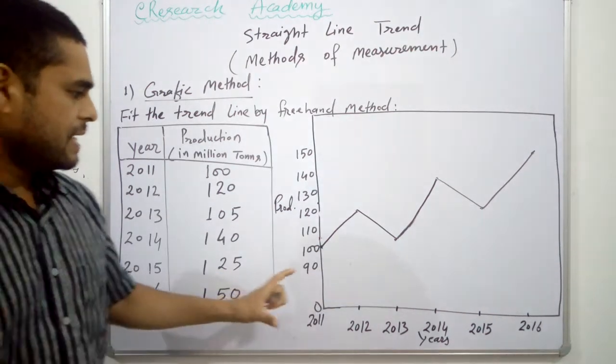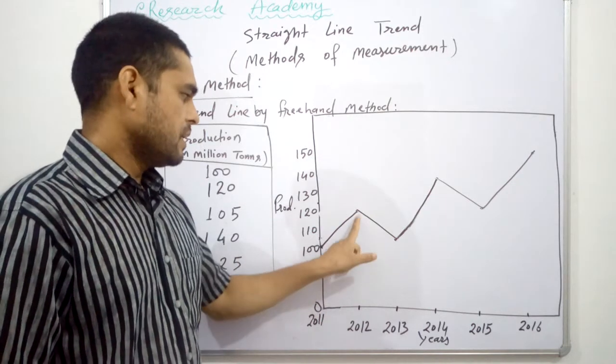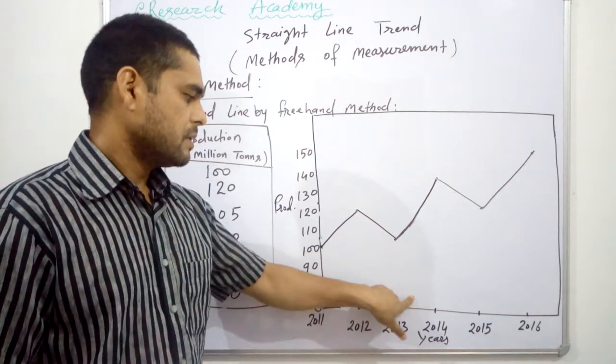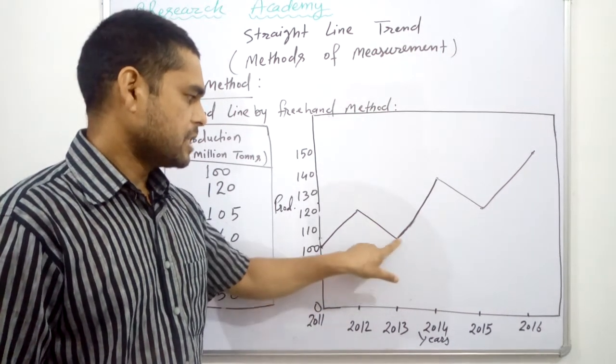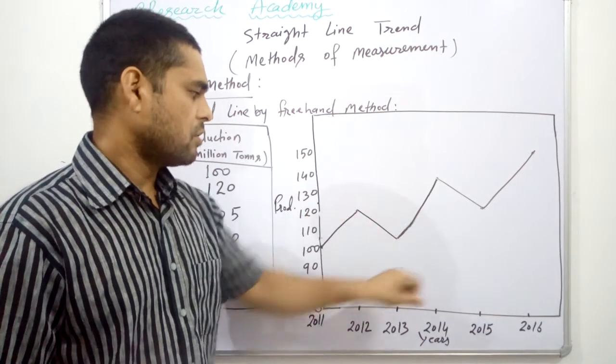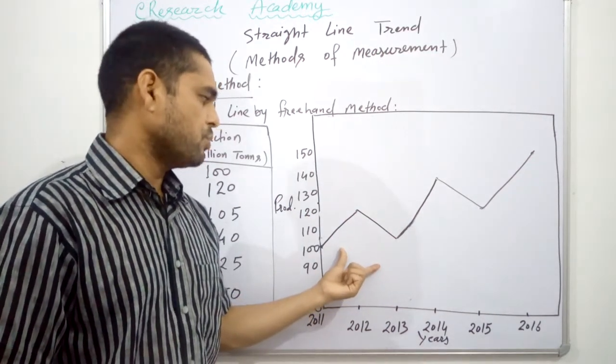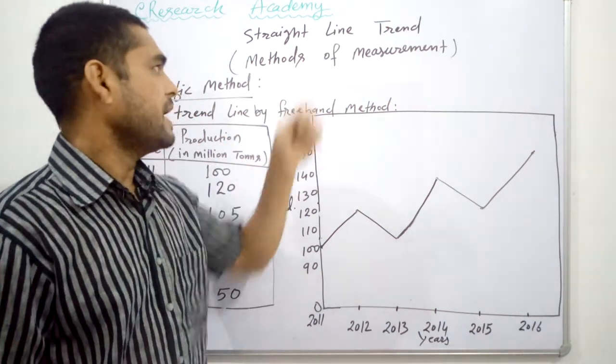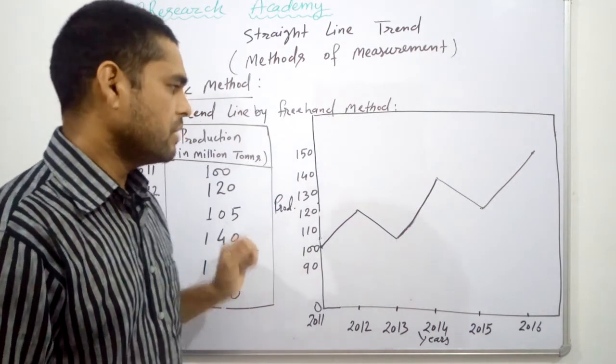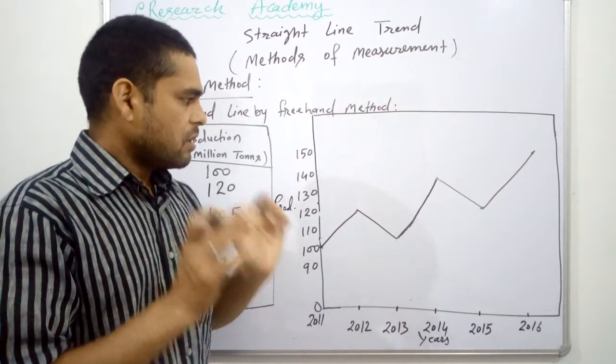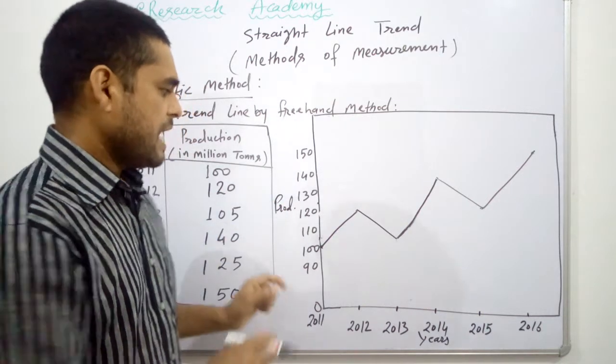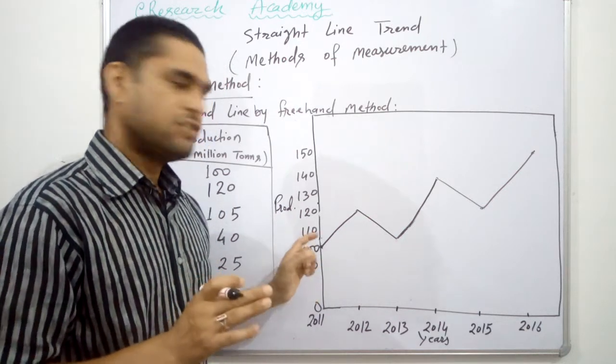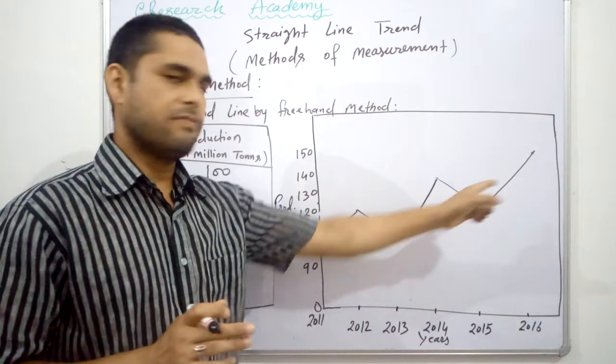Now the final step starts, and this is totally based on the judgments or personal experience or judgments of the statisticians or the person who is just using this graphic method or graphical method for estimating the value or predicting the value. Now, the rule of thumb is we have to draw a straight line or a line that best fit to these points or this graph.